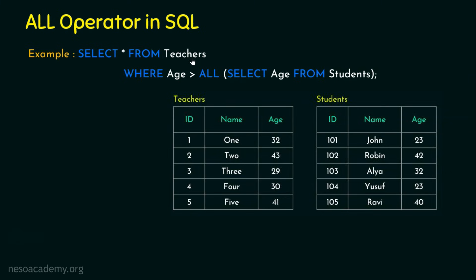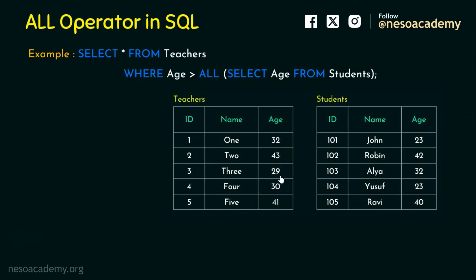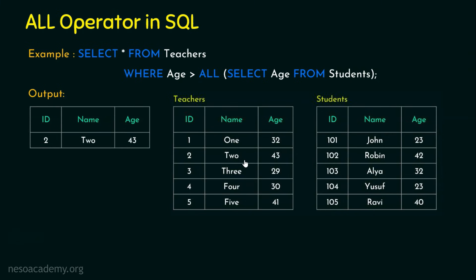The output will be teachers whose age is greater than ALL of those values. Is 32 greater than all? No, because 42 is in the list. Is 43 greater than all values? Yes — so 43 qualifies. 29 is not greater than 42, so it's excluded. 30 and 41 are also not greater than 42. The output contains only one row: the teacher with age 43.